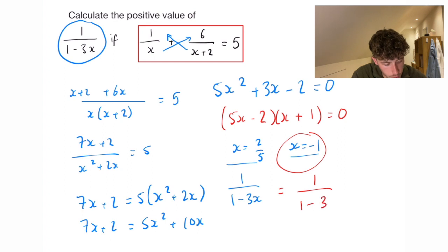So we're going to have 1 over 1 minus 3 times minus 1. 1 minus minus 3 is going to equal 4, so it's actually going to equal a quarter, and that is the final answer.